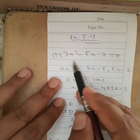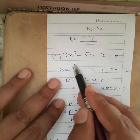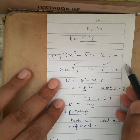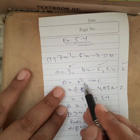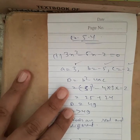When comparing with ax² + bx + c = 0, we get a = 3, b = -5, and c = -2. Now discriminant D is equals to b² - 4ac.